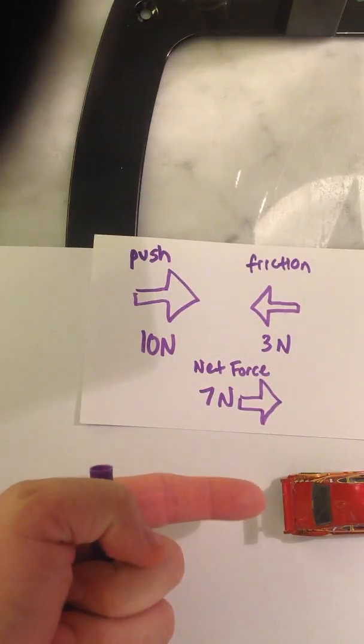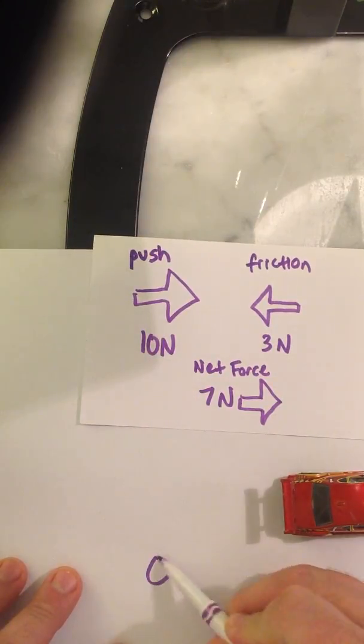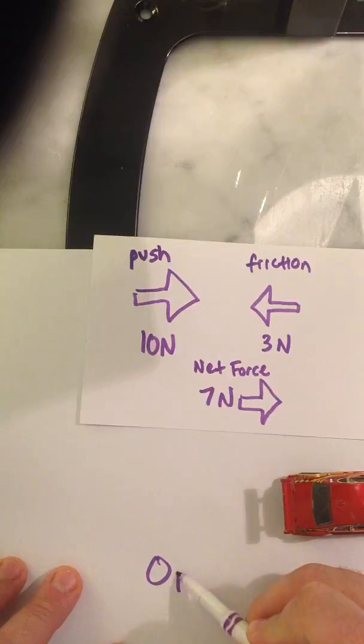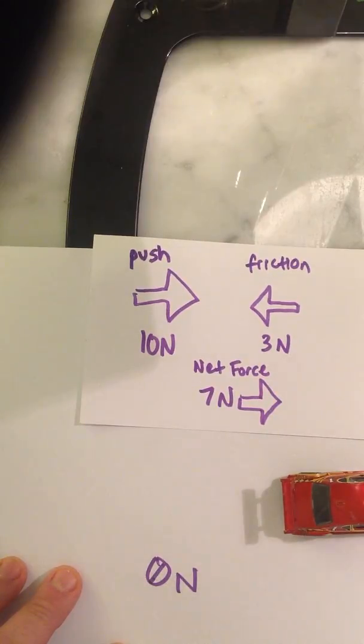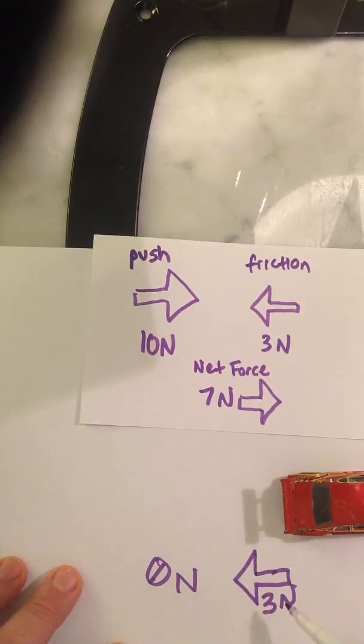If I don't continue to push that car with 10 newtons, then the force from this side becomes 0 newtons. When it becomes 0 newtons, suddenly the friction becomes the stronger force, and that 3 newtons works against the car until it finally brings it to a stop, and the forces become balanced again.